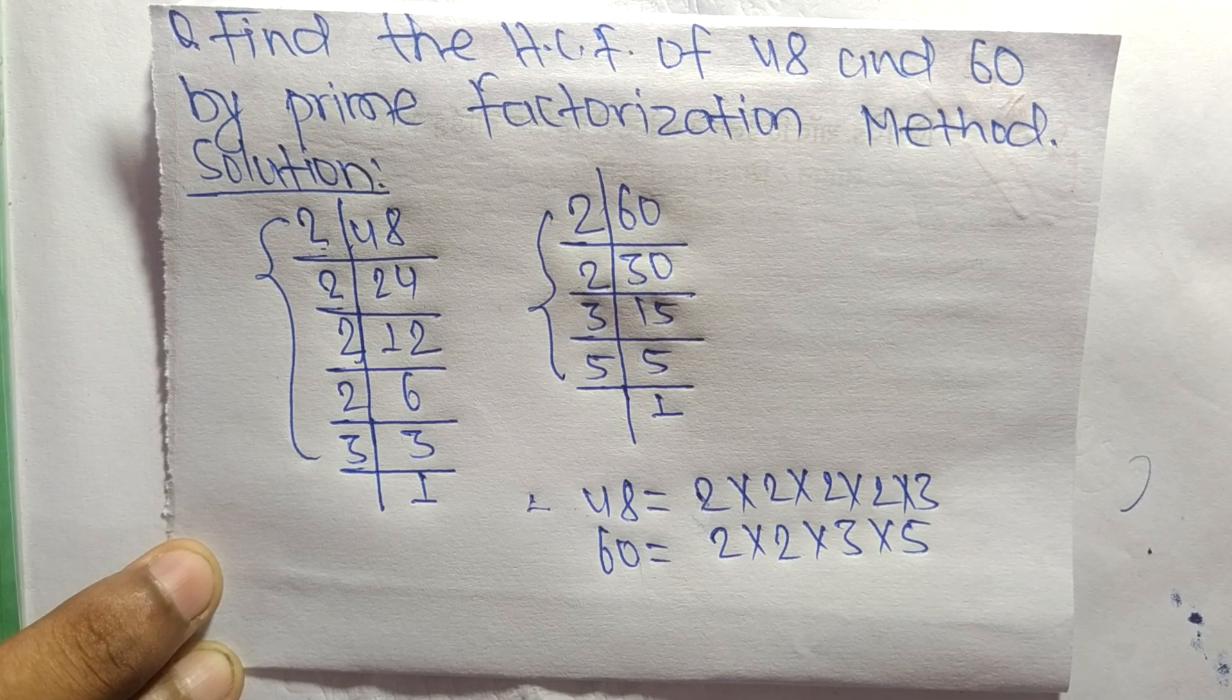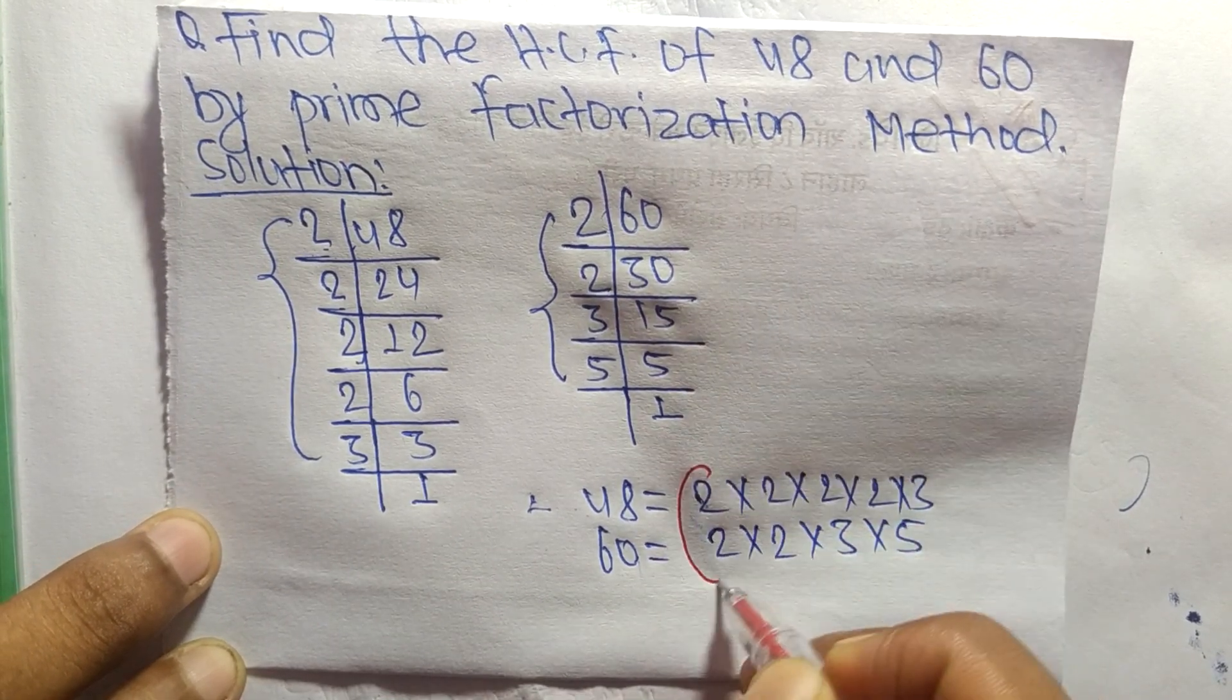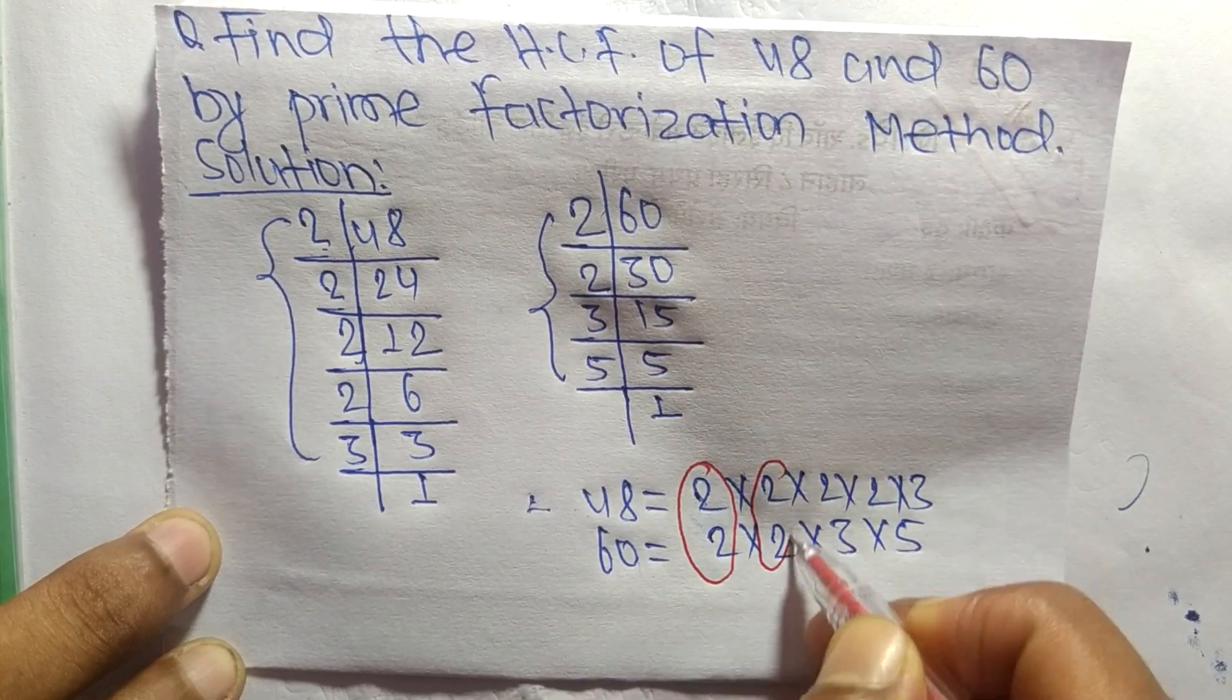We find out the common factors in these prime factors. The common factors here are 2, second common is 2, and the third one is 3.